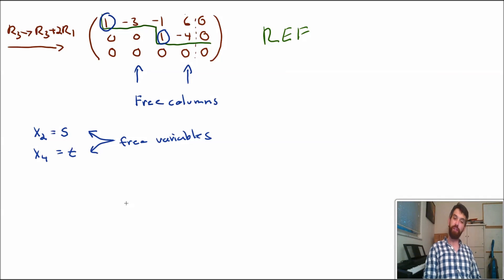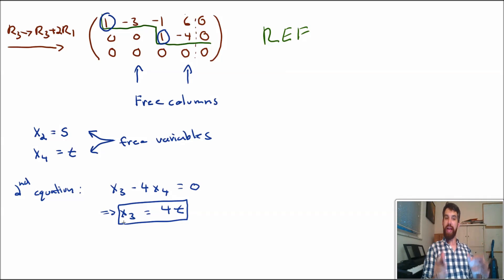And then my claim is that given this sort of arbitrary choice where I can let x2 be whatever and x4 be whatever, then my x1 and my x3 are going to be constrained by the two equations that I have. So for example, if I look at the second equation, then what I can say is that my x3 minus 4 times x4 is equal to 0, or in other words, x3 is equal to 4, and then since x4 was denoted t, it's going to be equal to 4 times t. So now I've translated. My x3 is now written in terms of these free parameters.